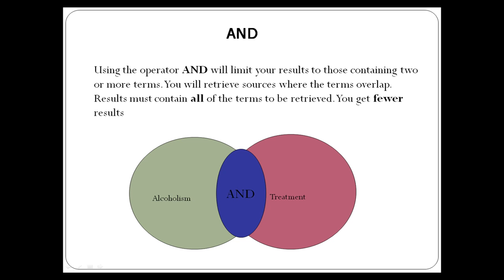The green circle represents a subset of literature that discusses alcoholism, and the pink circle represents a subset of literature about treatment. In this example, we want to find literature that discusses treatment for alcoholism, so we use the Boolean operator AND. When we combine our terms with AND, we end up with the literature in the blue oval, which signifies literature that discusses both alcoholism and treatment in the same article.